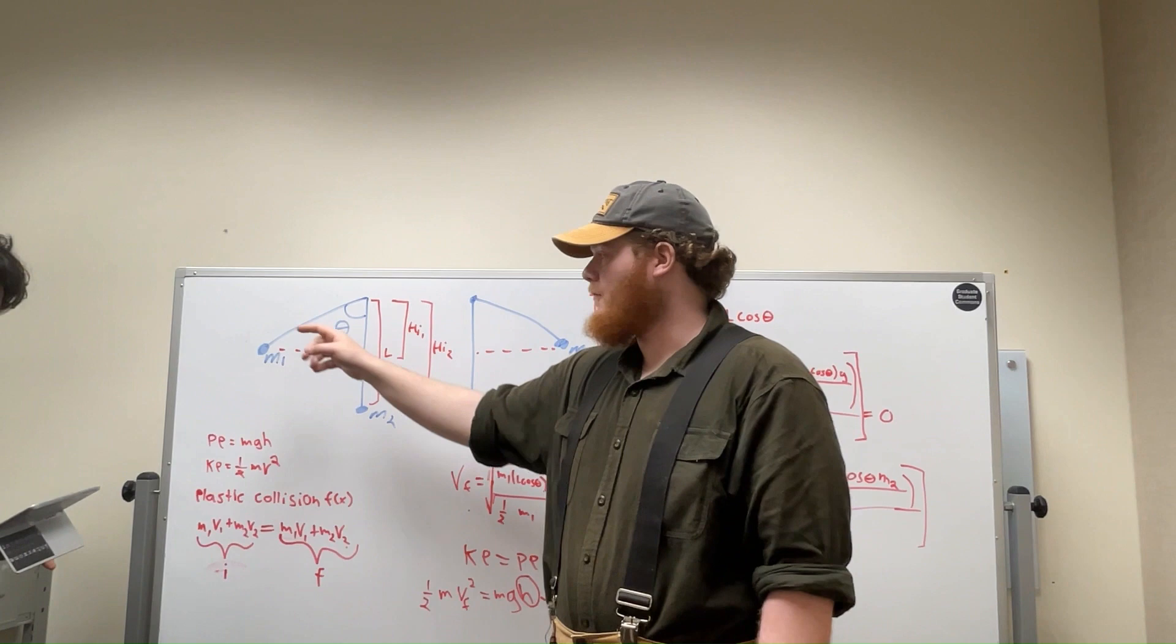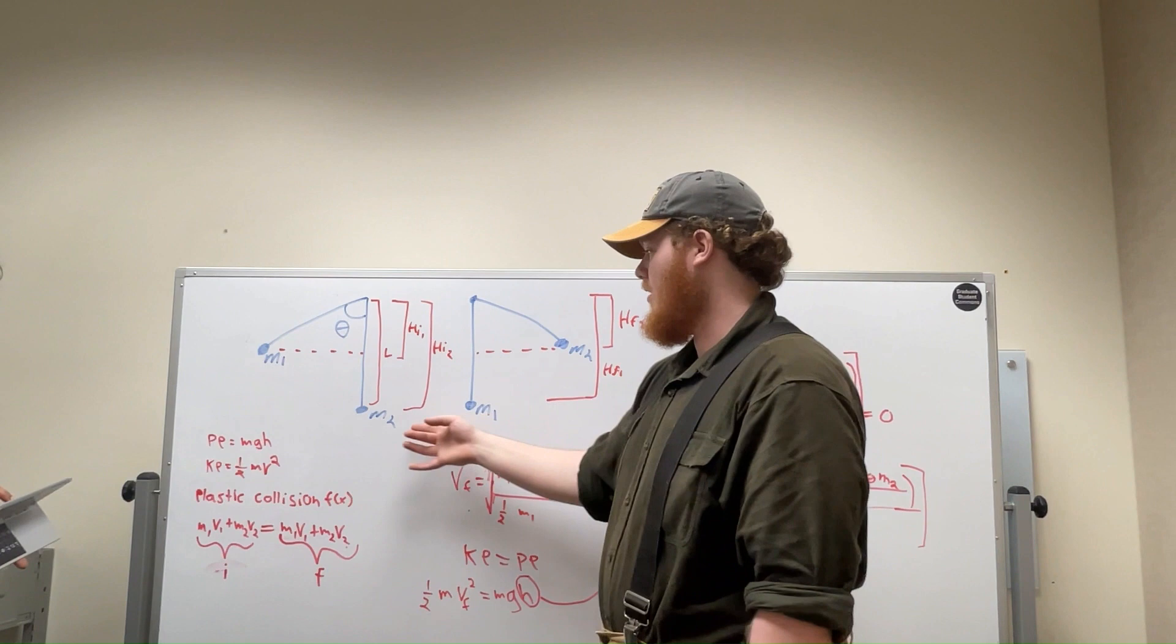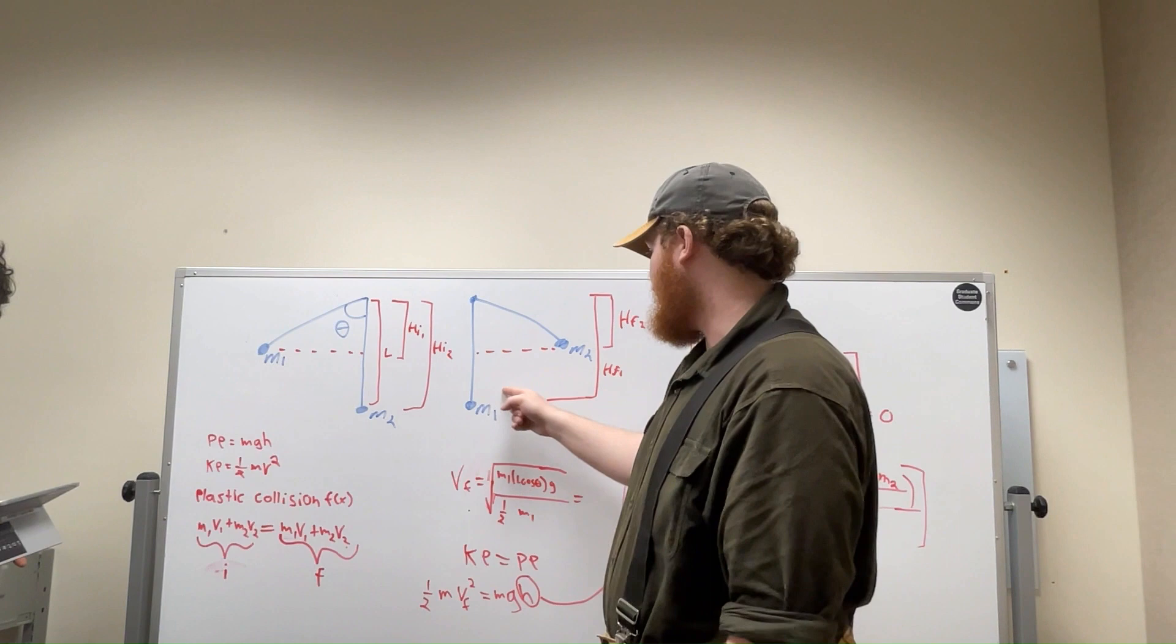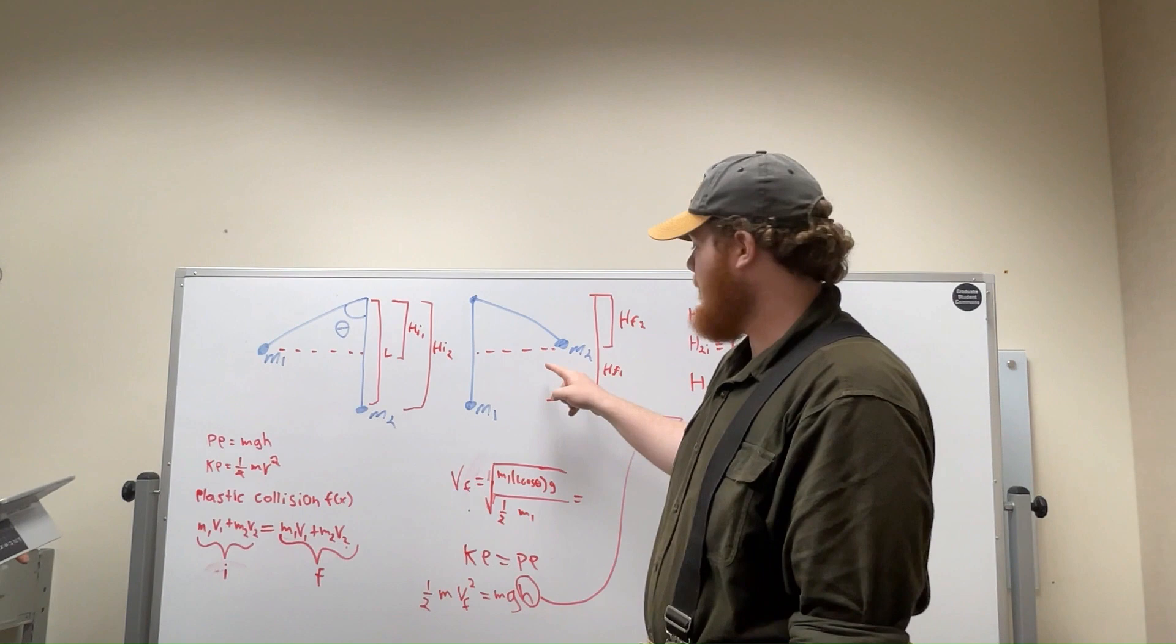After we release the ball and it swings on the pendulum down and it connects with the other ball, M2, it makes an energy transfer and swings the ball up an unknown distance, HF2.